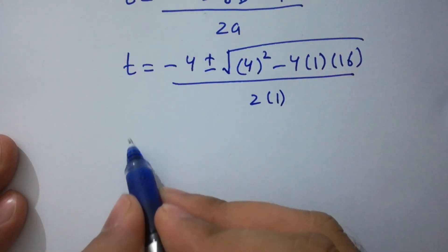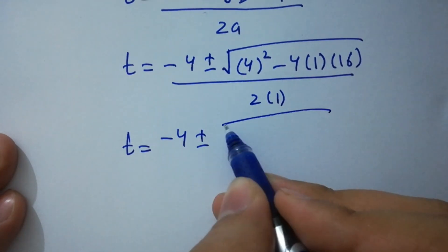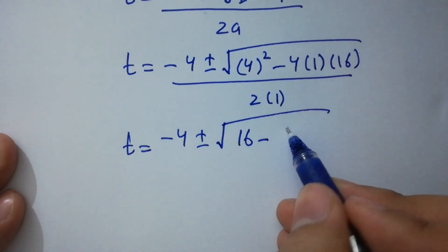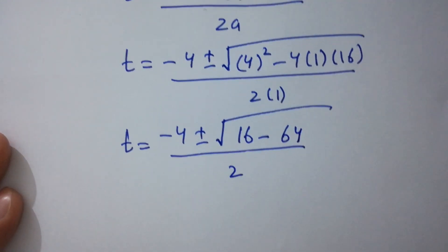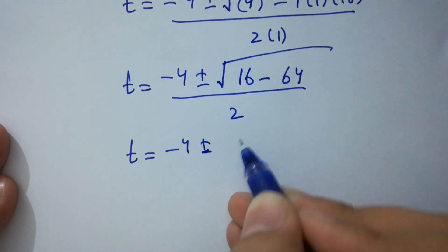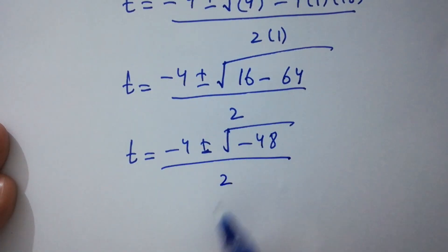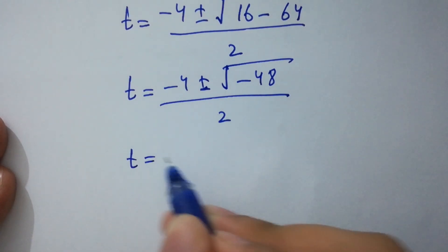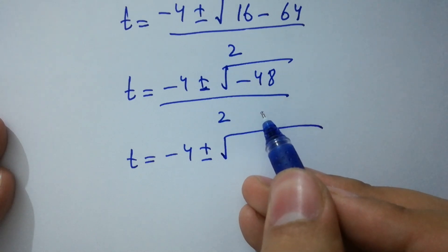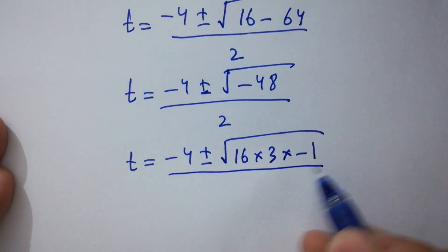Simplifying: t equals minus 4 plus or minus square root of 16 minus 64, over 2. That gives us minus 4 plus or minus square root of minus 48, over 2. We can write minus 48 as 16 times 3 times minus 1.